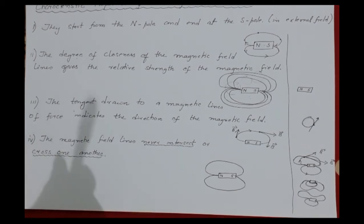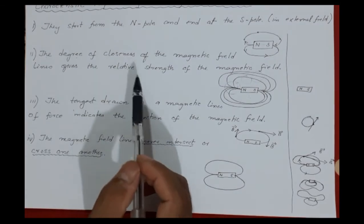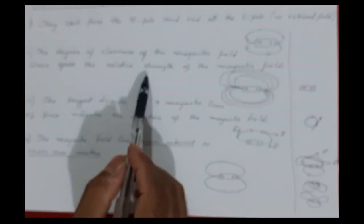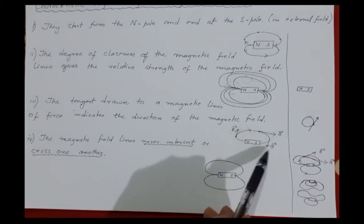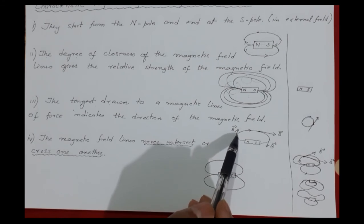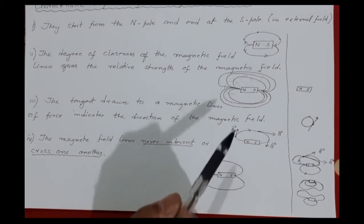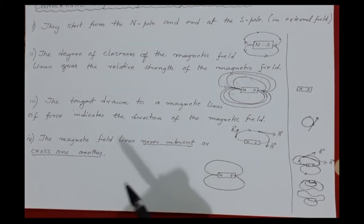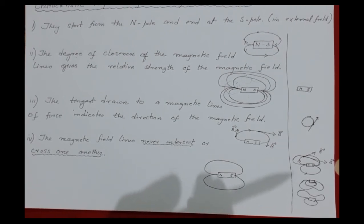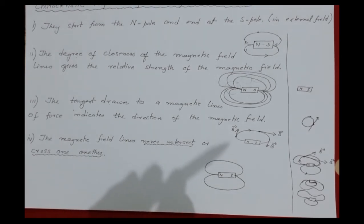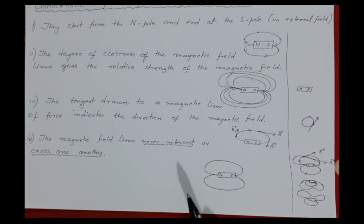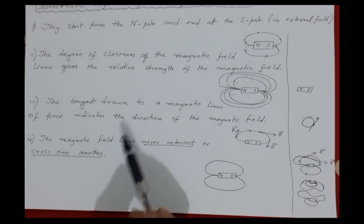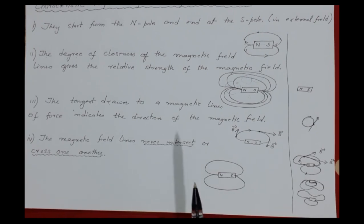To summarize all four characteristic properties: First, magnetic field lines start from the north pole and end at the south pole. Second, more field lines in an area means stronger magnetic field strength; fewer lines means weaker field. Third, the tangent drawn to a field line at any particular point gives the direction of the magnetic field at that point. Fourth, magnetic field lines cannot intersect or cross each other, because if they did, the direction would be doubled at that point, which is not possible. These are important characteristics to remember for your exams.